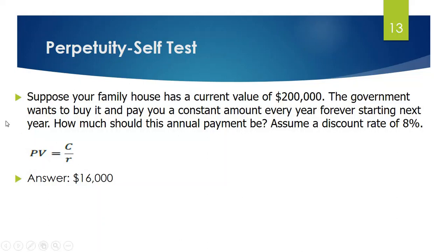Here, PV will be $200,000, which is the current value of your house, and the discount rate R is 8%. So if you do the cross multiplication, your annual payment should be $16,000.